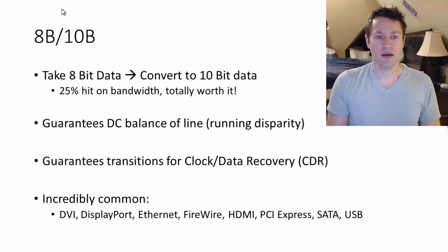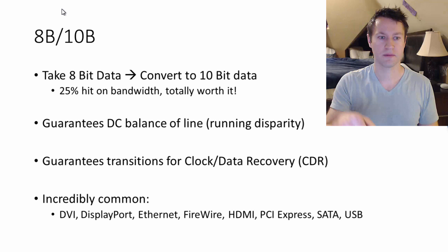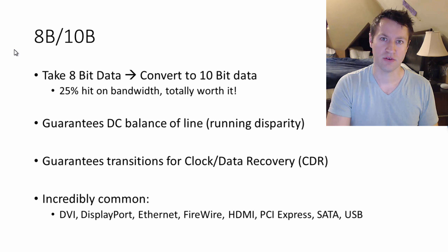Even if you're sending a long stream of zeros or ones, there's always transitions occurring. 8b10b guarantees that by the encoding standard. This is a super common interface encoding scheme. It's used on DVI, DisplayPort, Ethernet, FireWire, HDMI, PCI Express, SATA, and USB. I'm sure you've heard of at least a few of those. So it's very common, although you may never have heard of it. If you're implementing a SerDes transceiver in an FPGA, you're probably going to be dealing with 8b10b encoding on your transmitter and 8b10b decoding on your receiver.